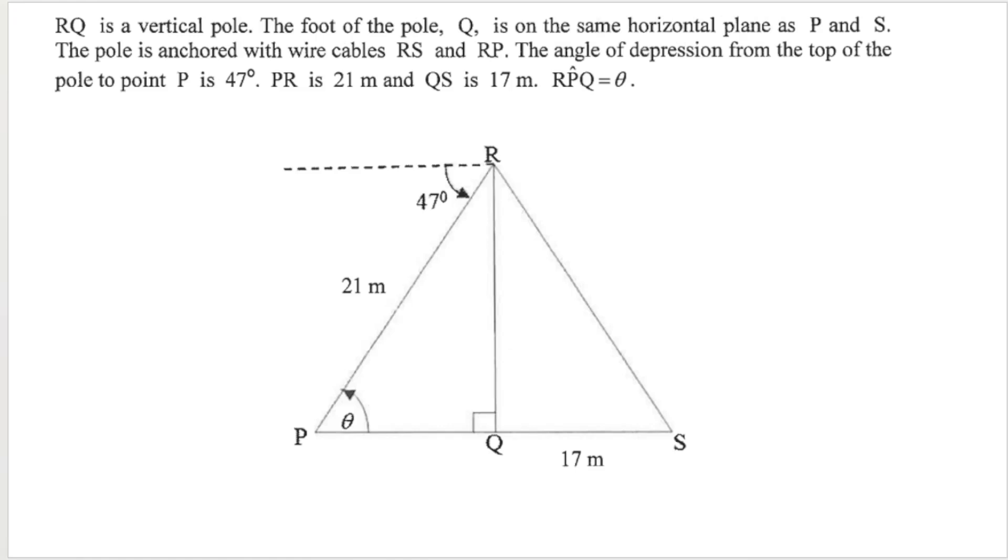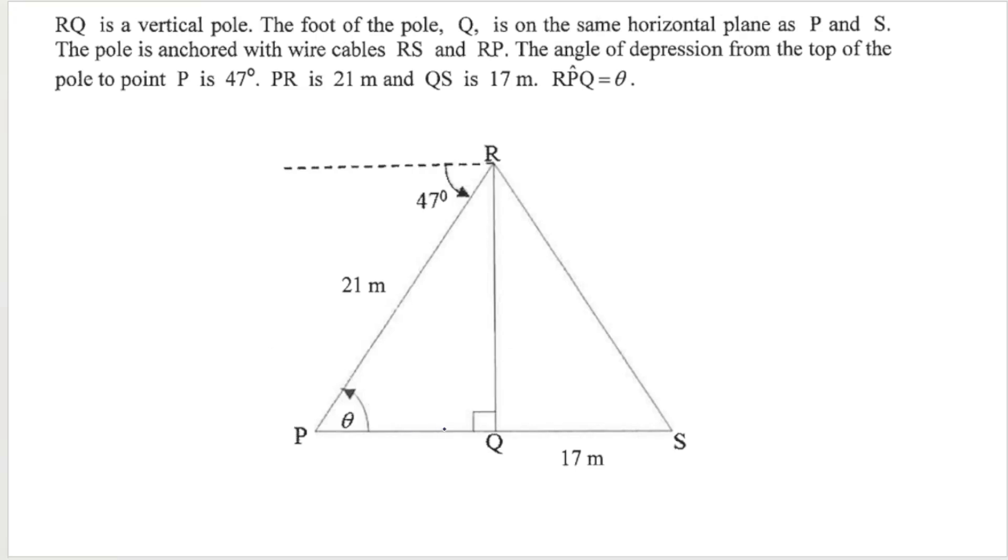In this question we've got that RQ is a vertical pole. You can see that it makes an angle of 90 degrees with PS, which is a horizontal plane like the ground. The foot of the pole, Q, is on the same horizontal plane as P and S.